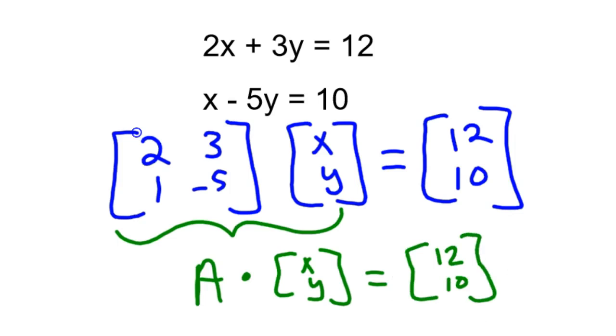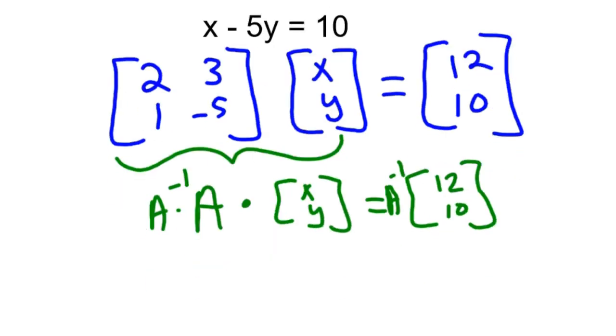Okay, so we've got this matrix. So basically we have this matrix A times XY equals the matrix 12, 10. And so what we're going to do is we're going to find the inverse of that. And if you take the inverse times A, you're going to get the identity matrix. And then we'll take that, whatever you do on the left side of the equation, you do on the right side of the equation. So we'll take the inverse of A times the matrix 12, 10. So let's go ahead and do that.